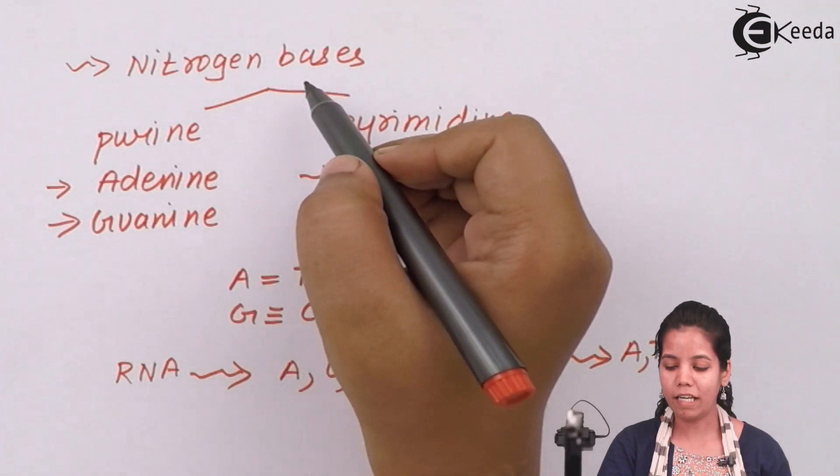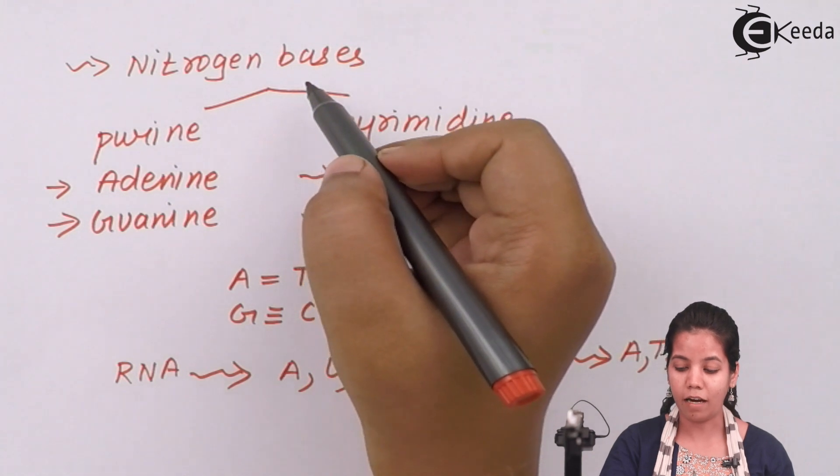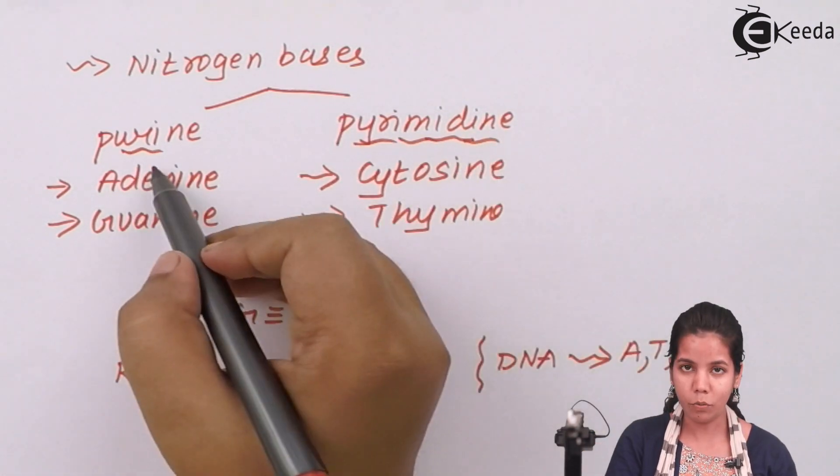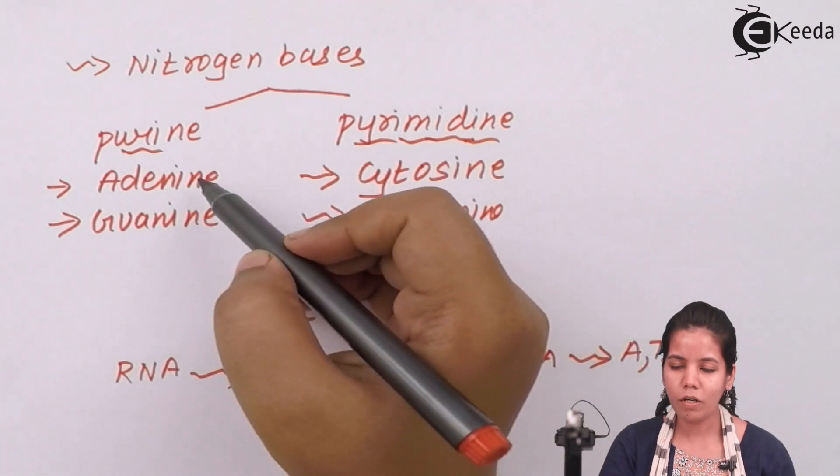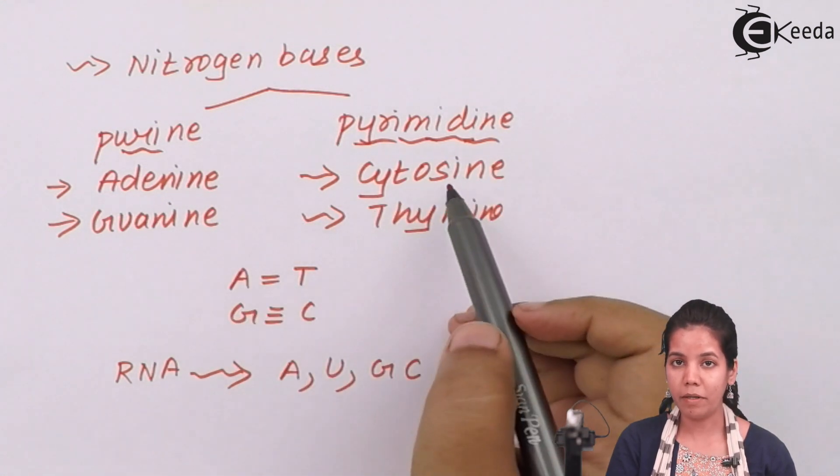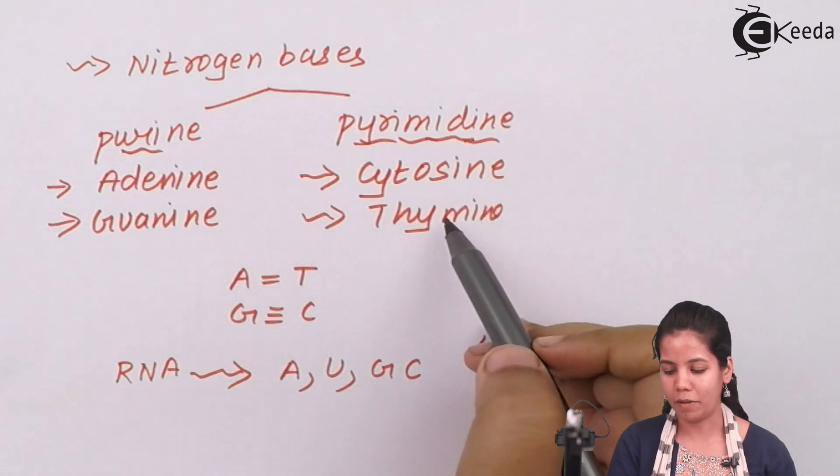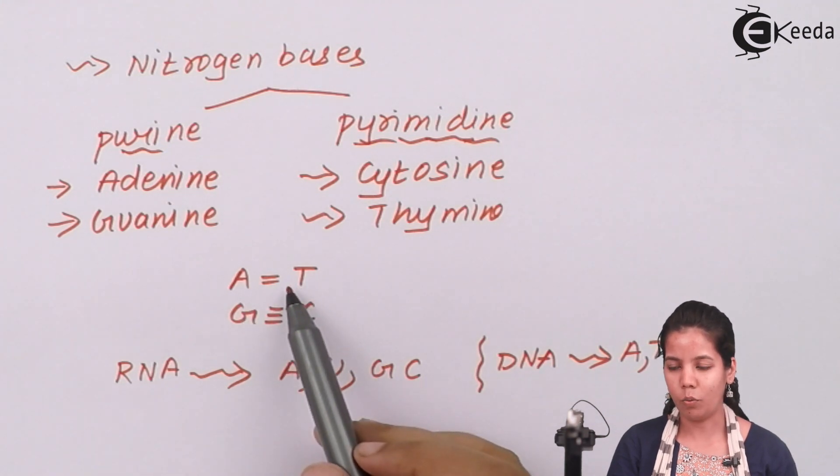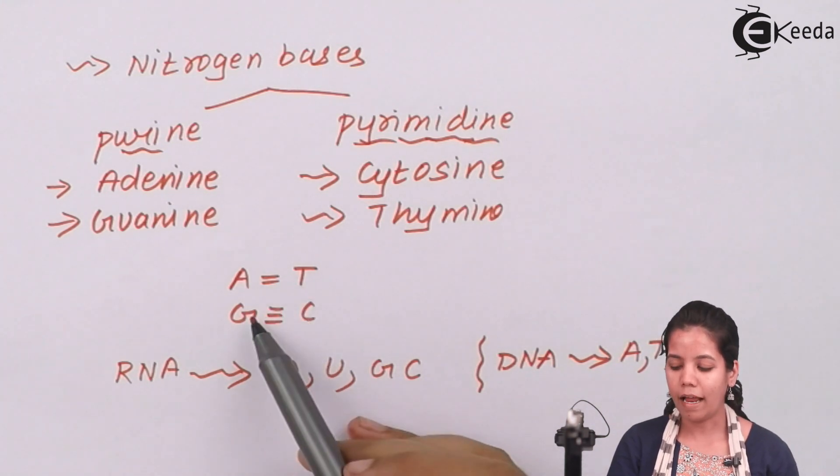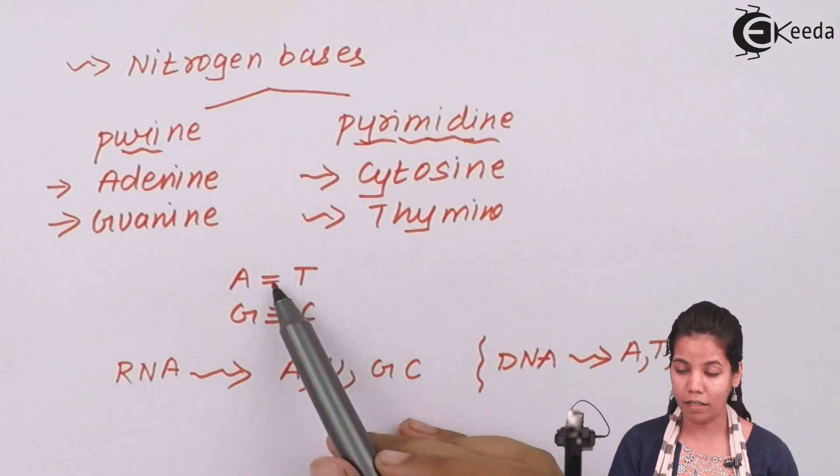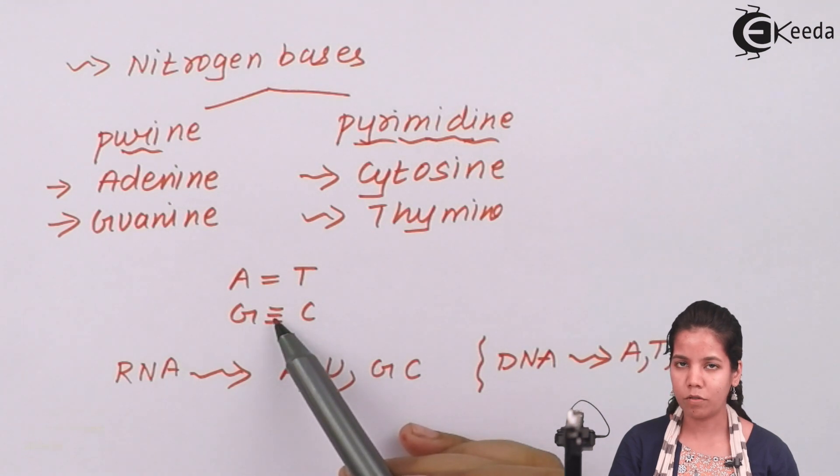Now the different kinds of nitrogen bases available are divided into two types. First are purines and second type is pyrimidine. Now purines basically include adenine and guanine, whereas pyrimidines include cytosine and thymine. Inside nitrogen bases, A pairs with T always, that is adenine pairs with thymine and guanine pairs with cytosine forming hydrogen bonds respectively. AT forms double bonds, GC forms triple bonds.